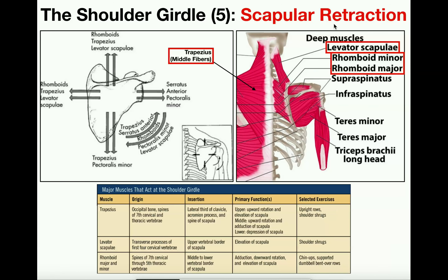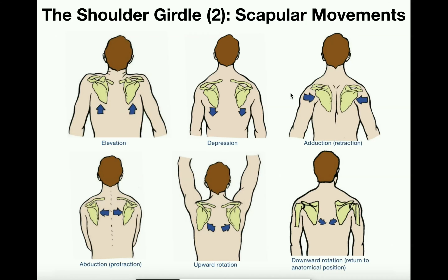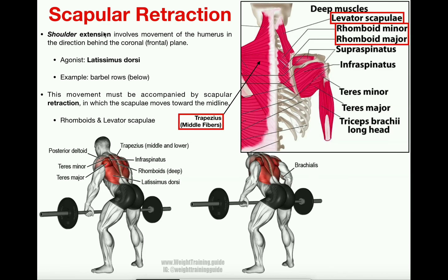Then we talked about scapular retraction — the opposite movement where the scapula retract or go toward the midline of the body, moving more medially. This is generally accompanied by shoulder extension, such as in a barbell row, where you're pulling your humerus on either side towards the back of your body, or in the direction behind the frontal plane.